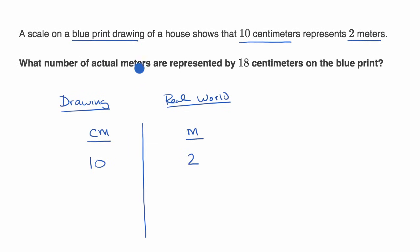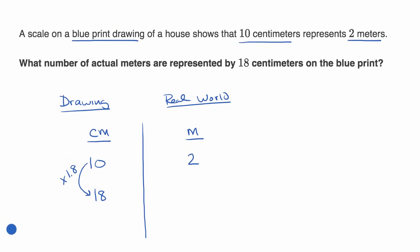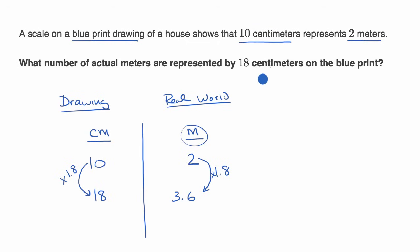They ask us what number of actual meters are represented by 18 centimeters on the blueprint. So 18 centimeters on the blueprint corresponds to what in the real world? To go from 10 to 18, we multiply by 1.8. So to find what 18 centimeters represents in the real world, we similarly multiply by 1.8, which gives us 3.6 meters in the real world.